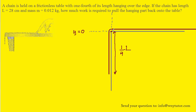If this point up here is located at y equals zero and we move below the origin, then at this point right here we would have a y value equal to negative one-fourth L. It's negative because we're moving down the negative y-axis.